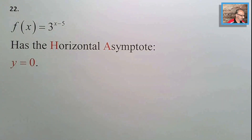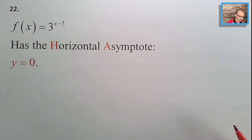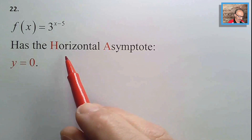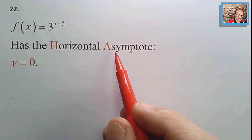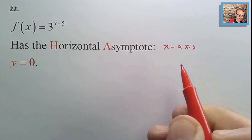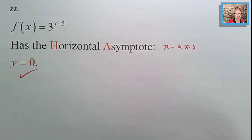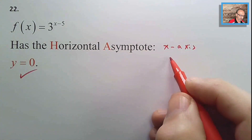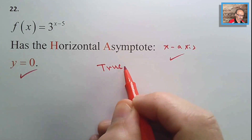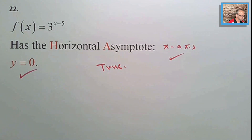Number twenty-one: the same function has a range of (0, ∞). Since the graph lives entirely above the x-axis with no vertical shift, the range for this exponential function is y > 0, or (0, ∞) — true.